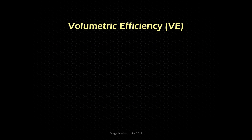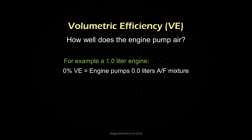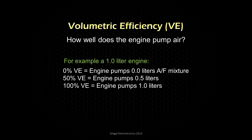I mentioned volumetric efficiency for speed density, so let's look at that. Volumetric efficiency is how well the engine pumps air — one engine cycle will pump a certain volume of air, and VE measures how efficiently it moves that volume. For example, with a one-liter displacement (1000cc) engine: at 0% VE it pumps zero liters, at 50% VE it pumps half a liter per cycle, and at 33% VE it pumps 0.33 liters.